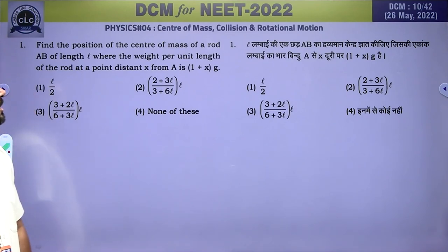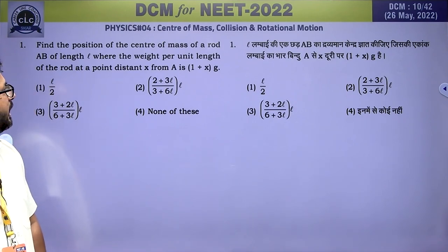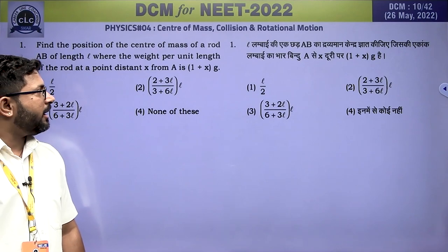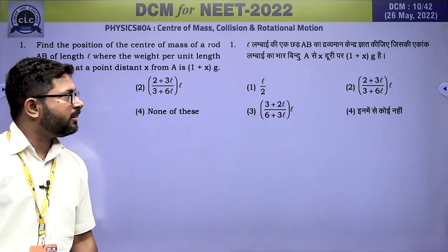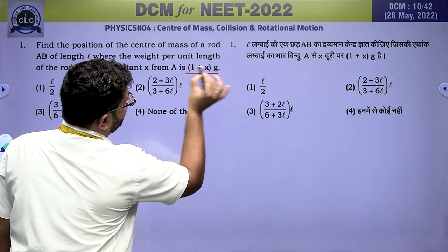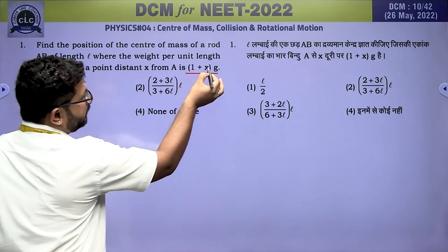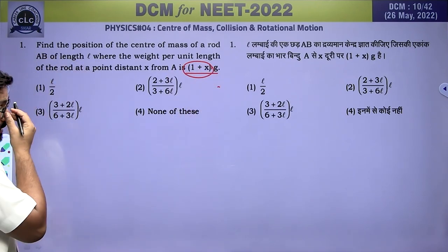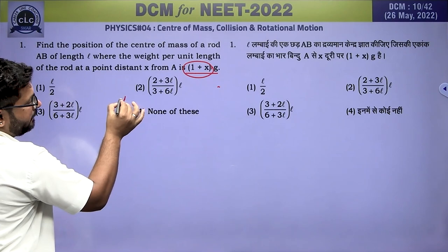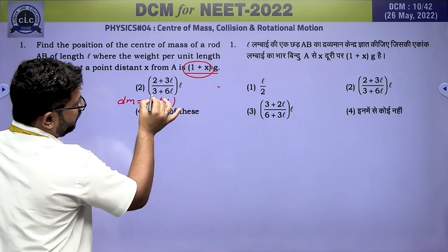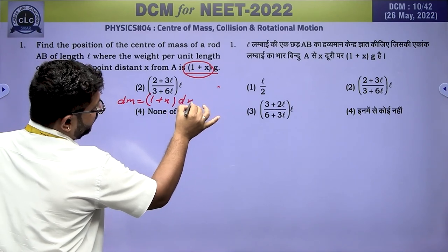First question: find the position of centre of mass of a rod AB of length L, where the weight per unit length of the rod at a point distant x from A is (1 + x)g. So the mass per unit length is (1 + x), and dm equals (1 + x)dx.